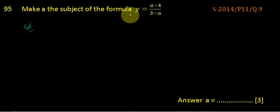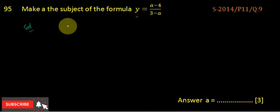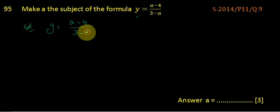So we have to make A as the subject. Here, Y is the subject right now. So the question is Y equals A minus 4 divided by 3 minus A.